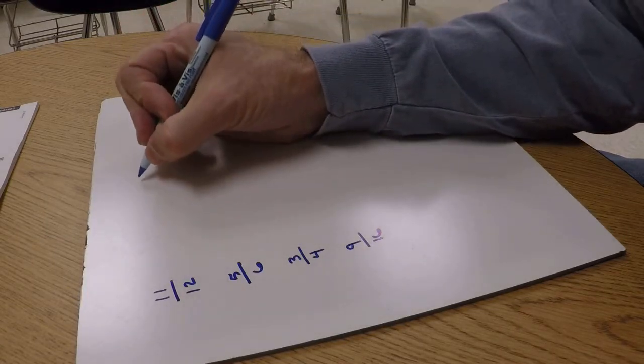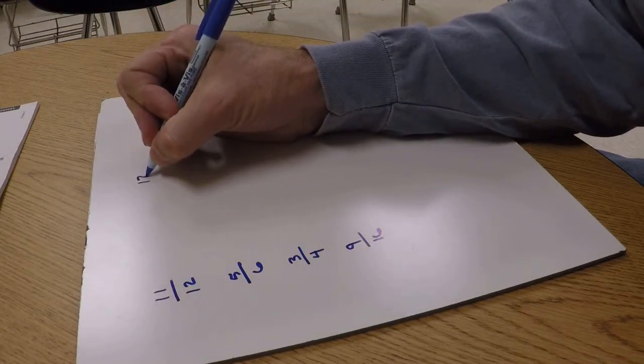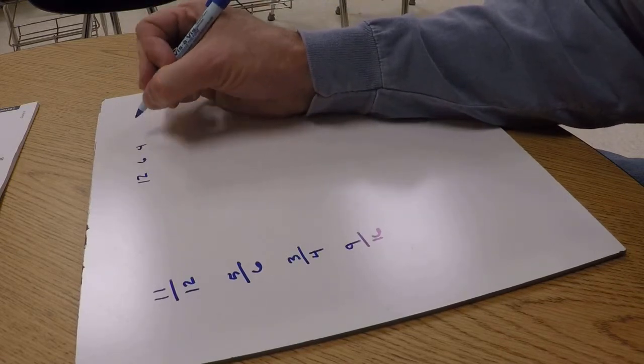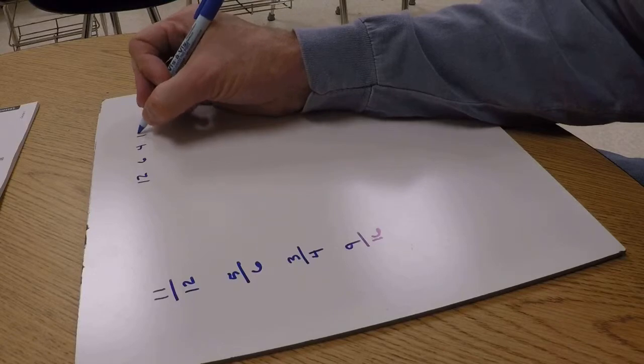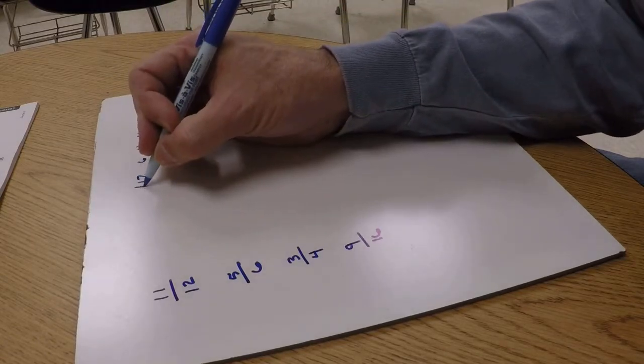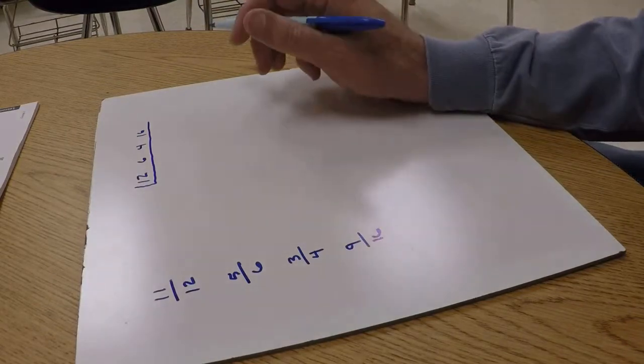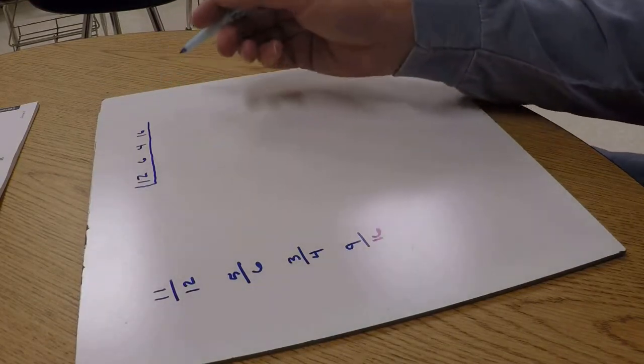Doing the ladder method, we put all of those numbers - the 12, the 6, the 4, and the 16 - and we just need to find the least common multiple that all these numbers will fit in.